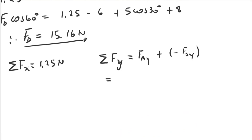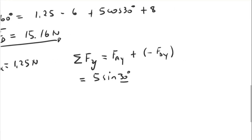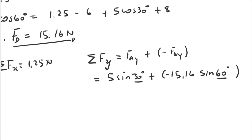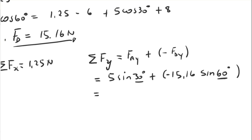Sigma Fy equals FAy minus FDy, which is 5 sin 30° minus 15.16 sin 60°. The angle between FA and the horizontal is 30° and the angle between FD and the horizontal is 60°. This works out to negative 10.63 newtons, meaning 10.63 newtons downward.